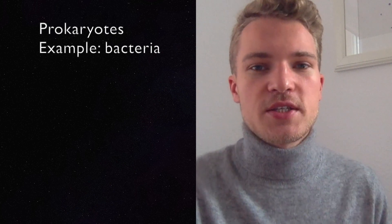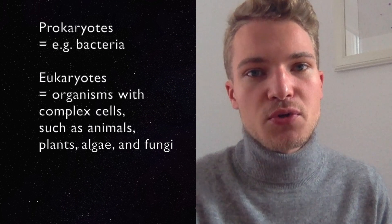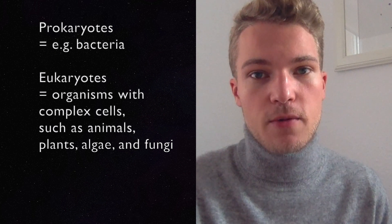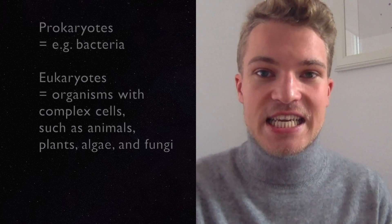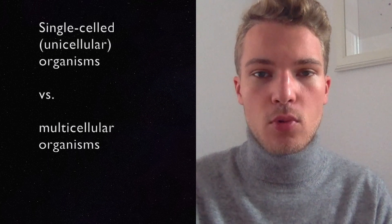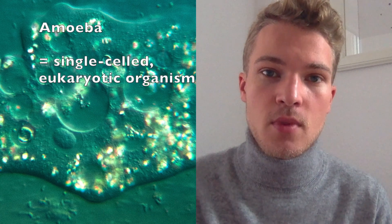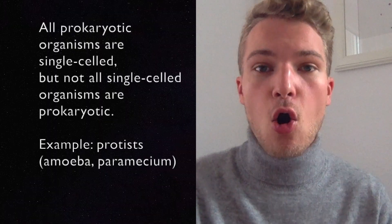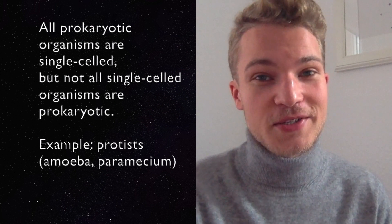Eukaryotic cells are most everything else — for instance, all the cells in your body are eukaryotic. Another important distinction: there are single-celled organisms and multicellular organisms. Something like an amoeba is a single-celled organism, but it is eukaryotic. All prokaryotic organisms are single-celled, but not all single-celled organisms are prokaryotic — those are two terminologies important to differentiate between.